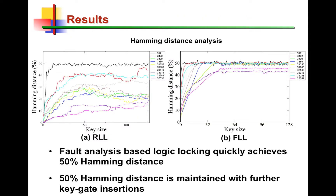Comparing random logic locking to fault analysis-based logic locking, we observe that FLL reaches the 50% corruption level upon inserting fewer key gates, as opposed to random logic locking, which sometimes may not even guarantee that corruption level at the outputs. In FLL, we reach either 50% or close to 50% and maintain that corruption level even as we increase the key size.